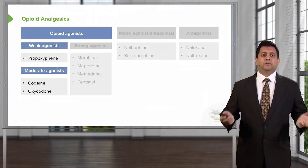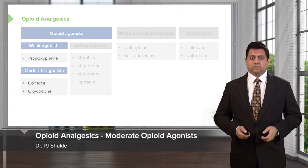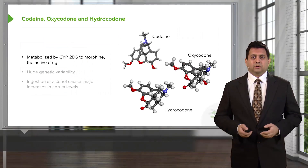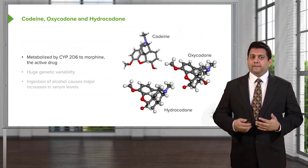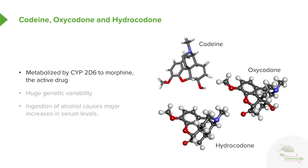Let's move on to the moderate agonists — codeine and oxycodone. These are the most prescribed opioids out there. They are metabolized by cytochrome 2D6 to morphine, which is the active component or active drug. It's actually not quite exactly morphine, but close enough for this lecture.